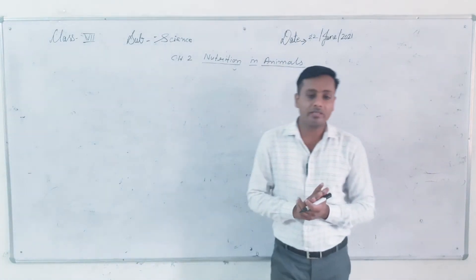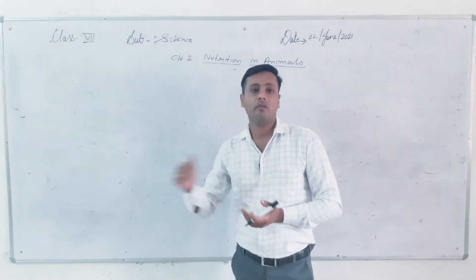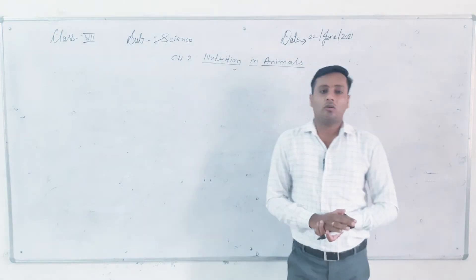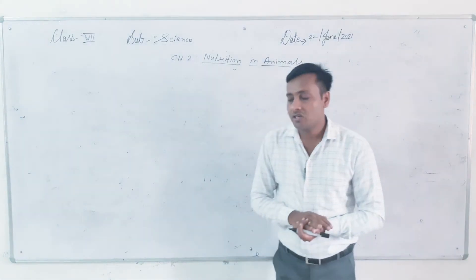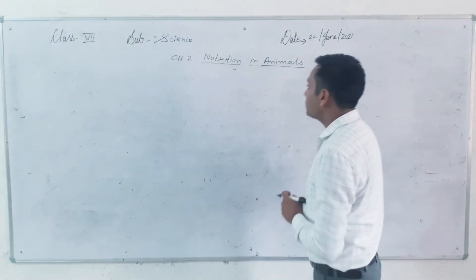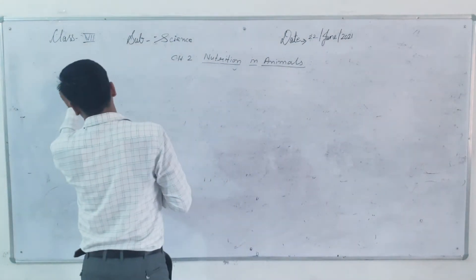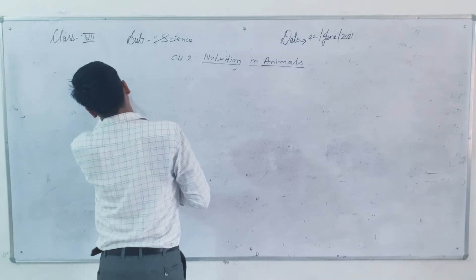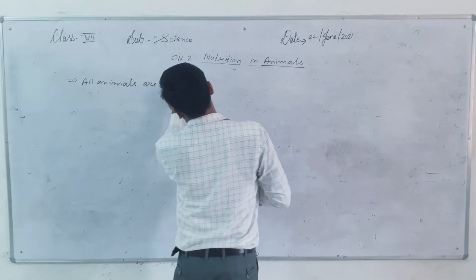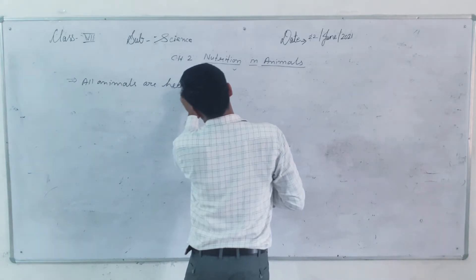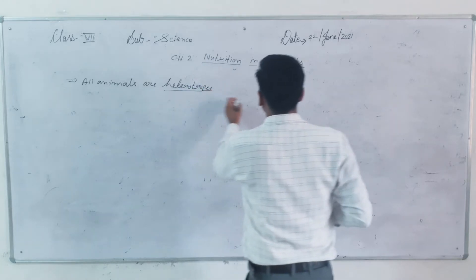We discussed two types of nutrition in the mode of nutrition. Plants follow the autotrophic mode of nutrition, and animals follow the heterotrophic mode of nutrition. All animals are heterotrophs.